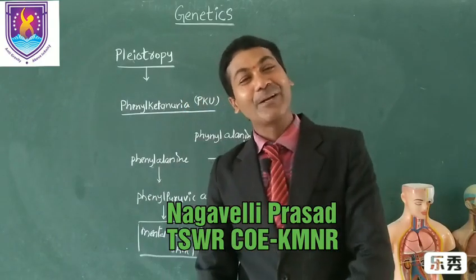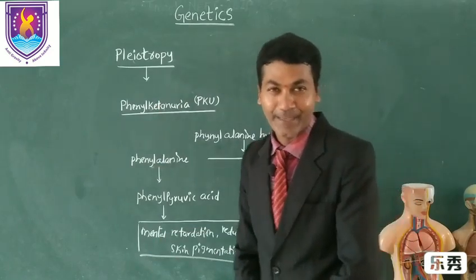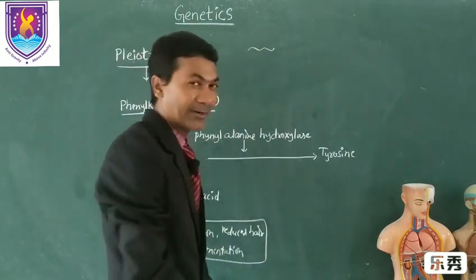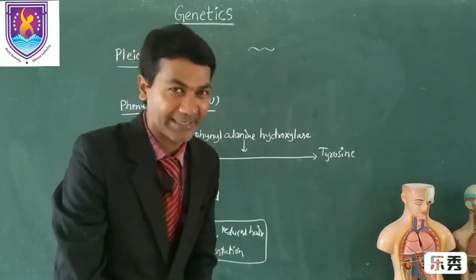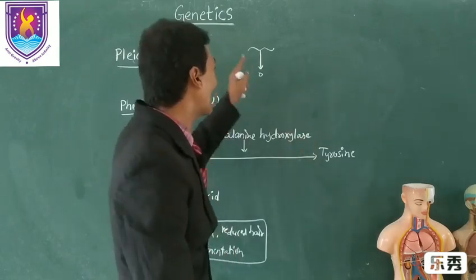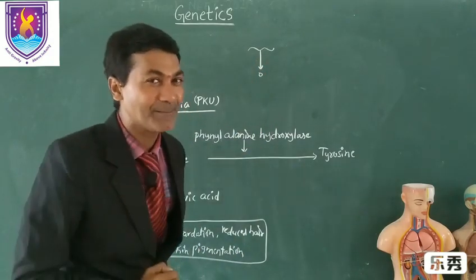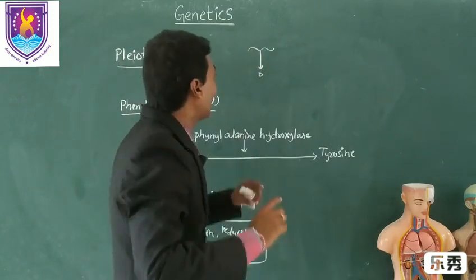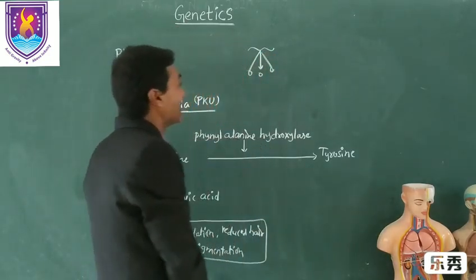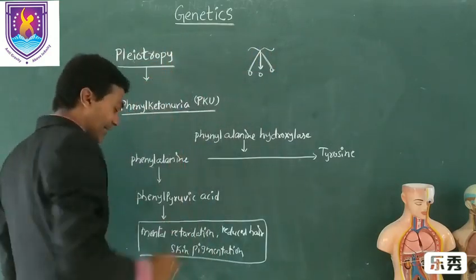Hello everyone. Now I am going to explain the wonderful concept of genetics that is pleiotropy. It is an established fact that a specific gene in our body controls a specific phenotypic trait. But this finding is not always true. Studies on gene expression revealed that sometimes a single gene is involved in controlling many phenotypic traits. This phenomenon of multiple effects of a single gene is known as pleiotropy.